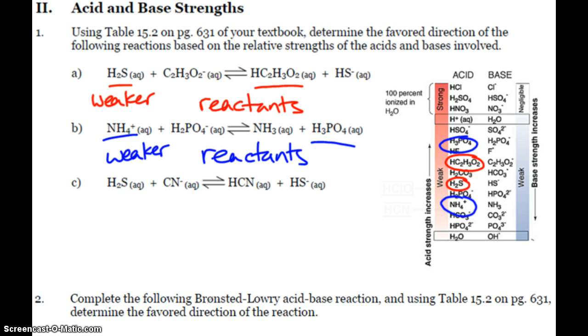The last one, cyanide is kind of not on this list, but it's below NH4, sorry, HCN, hydrogen cyanide. So when I compare that to H2S, H2S is already circled up there. So this time, we're going to be going towards the products as the HCN is weaker than the H2S.